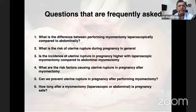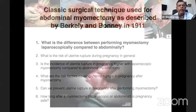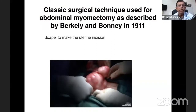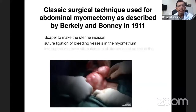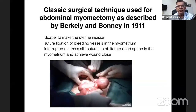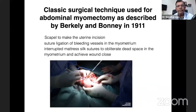I'll try to look at the literature and answer these questions. The classic surgical technique for abdominal myomectomy was described by Berkeley and Bonnie in 1911. They used a scalpel to make the uterine incision, suture ligation of bleeding vessels in the myometrium, and interrupted mattress silk sutures to obliterate dead space in the myometrium and achieve wound closure. I just want to remind you how we all do this surgery, perhaps slightly differently from one another.